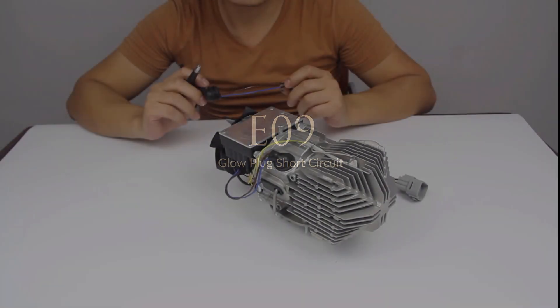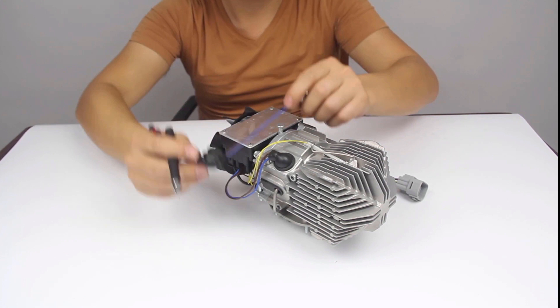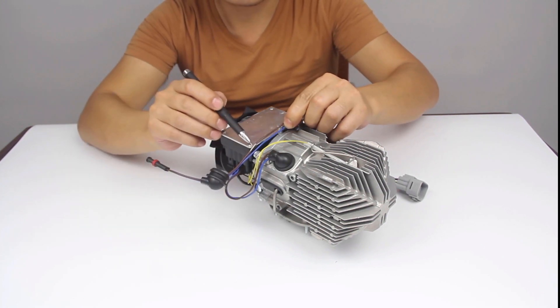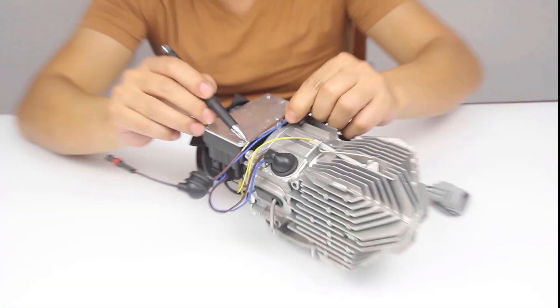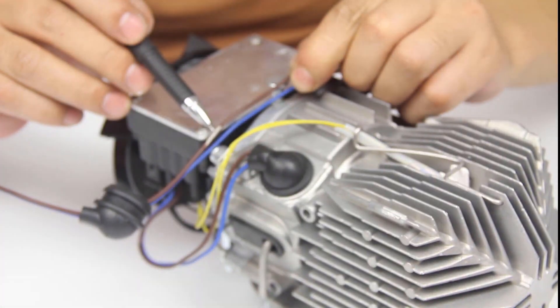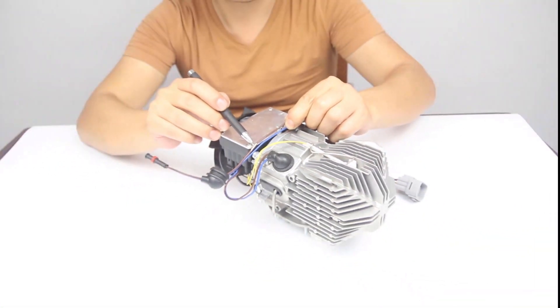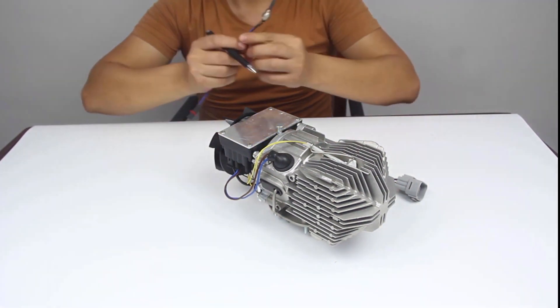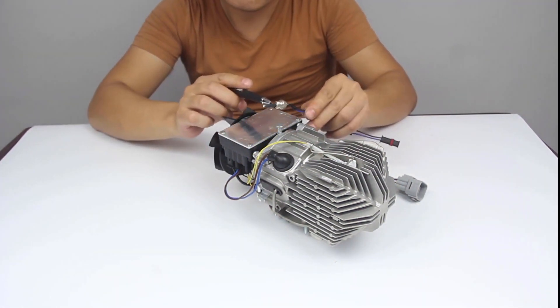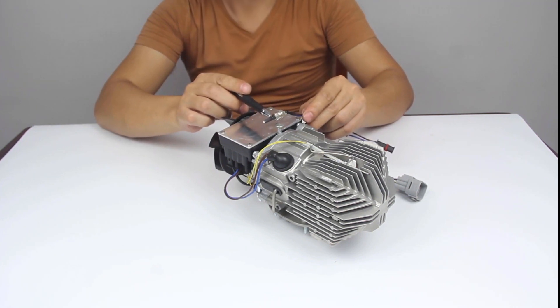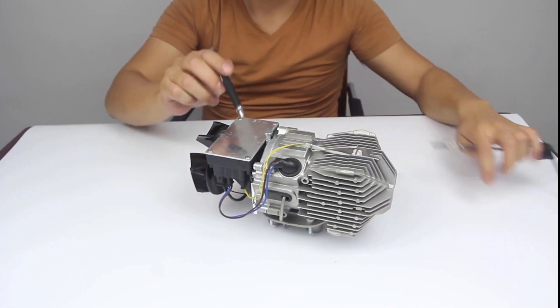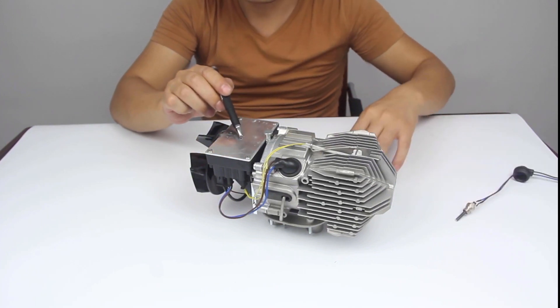Error code 9, glow plug short circuit. To address error 9, it is necessary to inspect three specific locations. Initially, examine the glow plug wires to verify that the Teflon wire protection is intact and not damaged. Next, conduct a physical examination of the glow plug. Ensure that it is free from any cracks or breakages. Thirdly, check the circuit board to make sure that it is not broken.